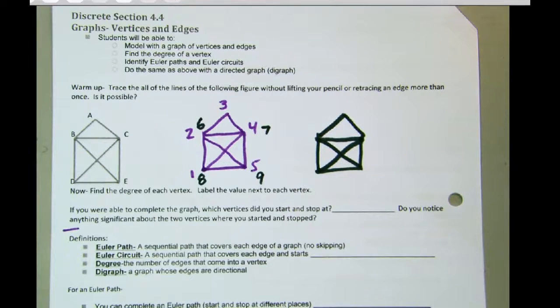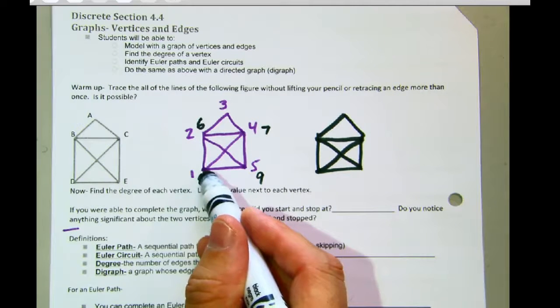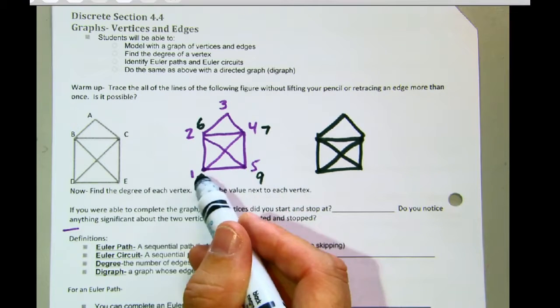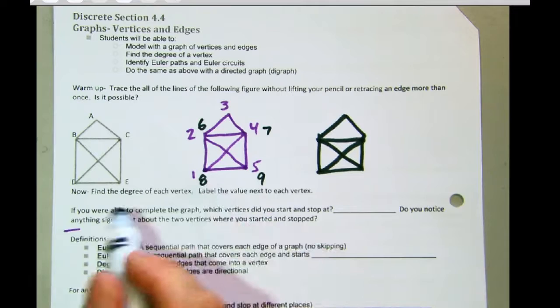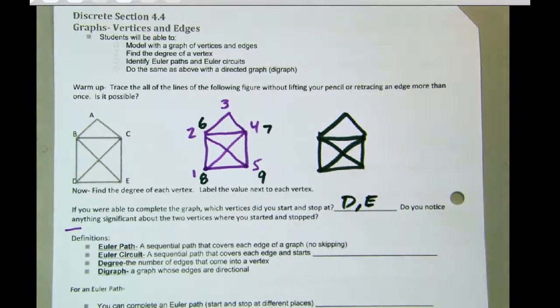Now, if you notice, if you were able to complete it, I'm going to guarantee, if you did it properly, everyone who did it started here and finished here or started here and finished here. Regardless, they started at D and E or finished at D and E. That's the only way you can traverse this, cover it, in other words.